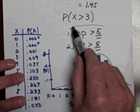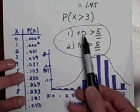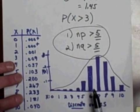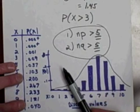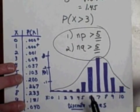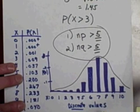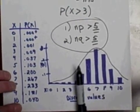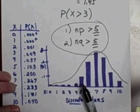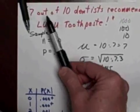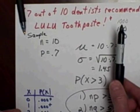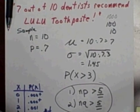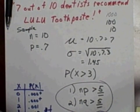If these two conditions are true, and you can find it by just multiplying n times p and n times q, if they're bigger than five, then yes we are allowed to use a normal distribution to estimate probabilities from a binomial distribution. A binomial distribution usually involves a proportion such as seven out of ten - that's a proportion, seventy percent. And this is how we use a normal distribution to estimate a binomial distribution.